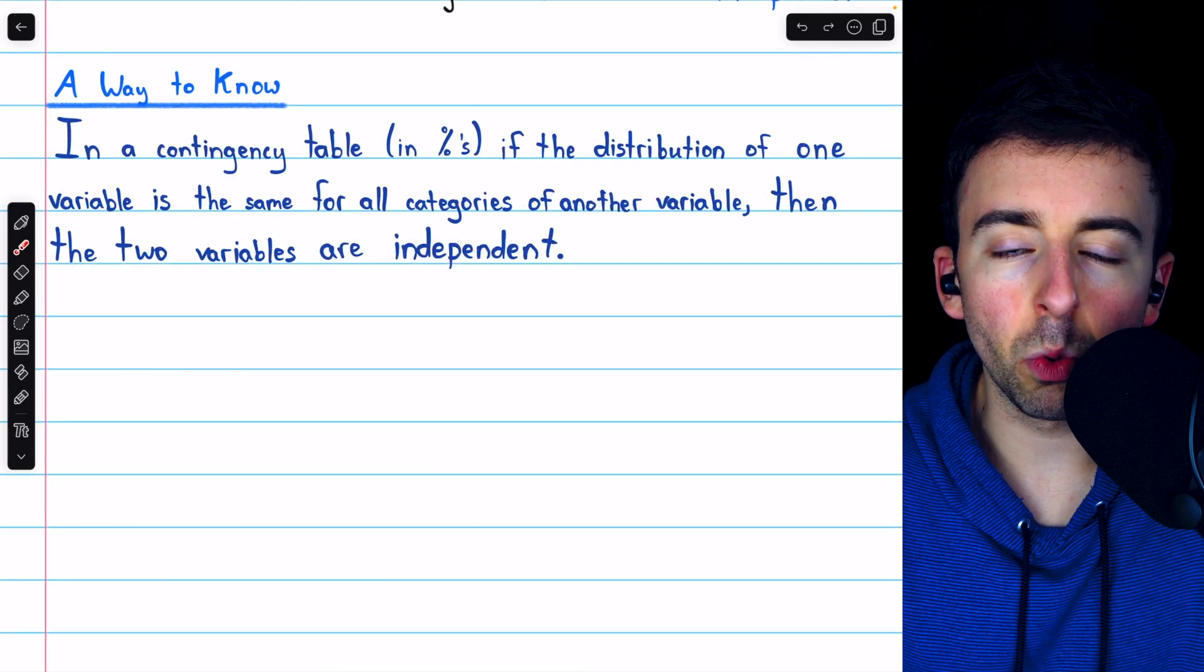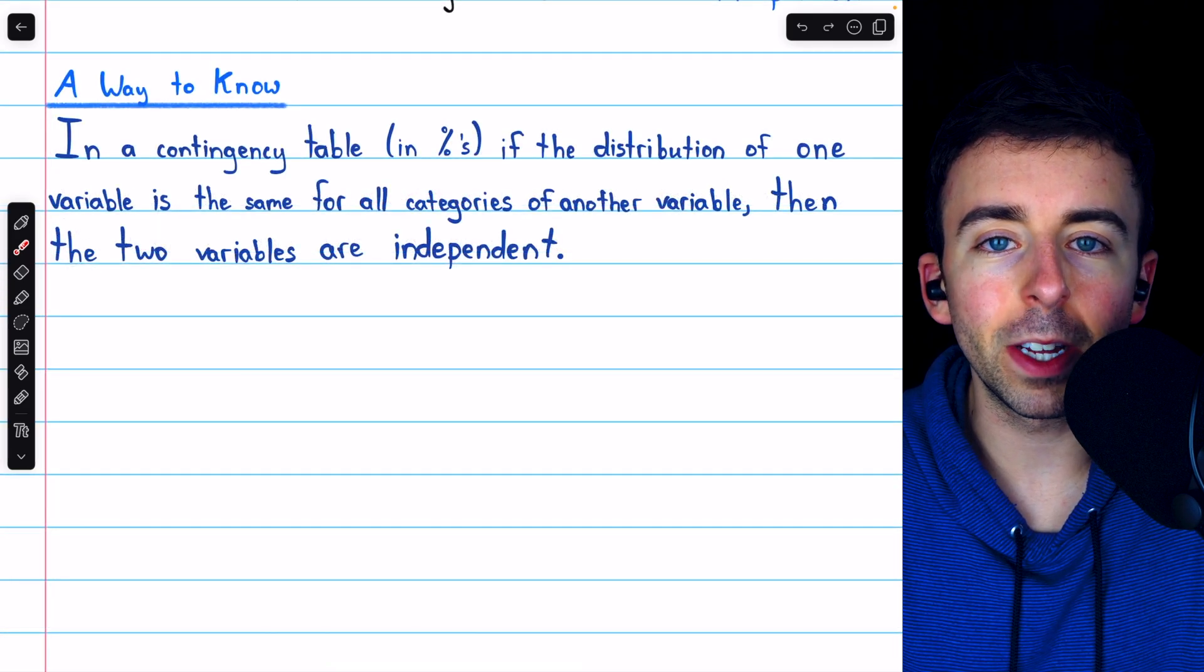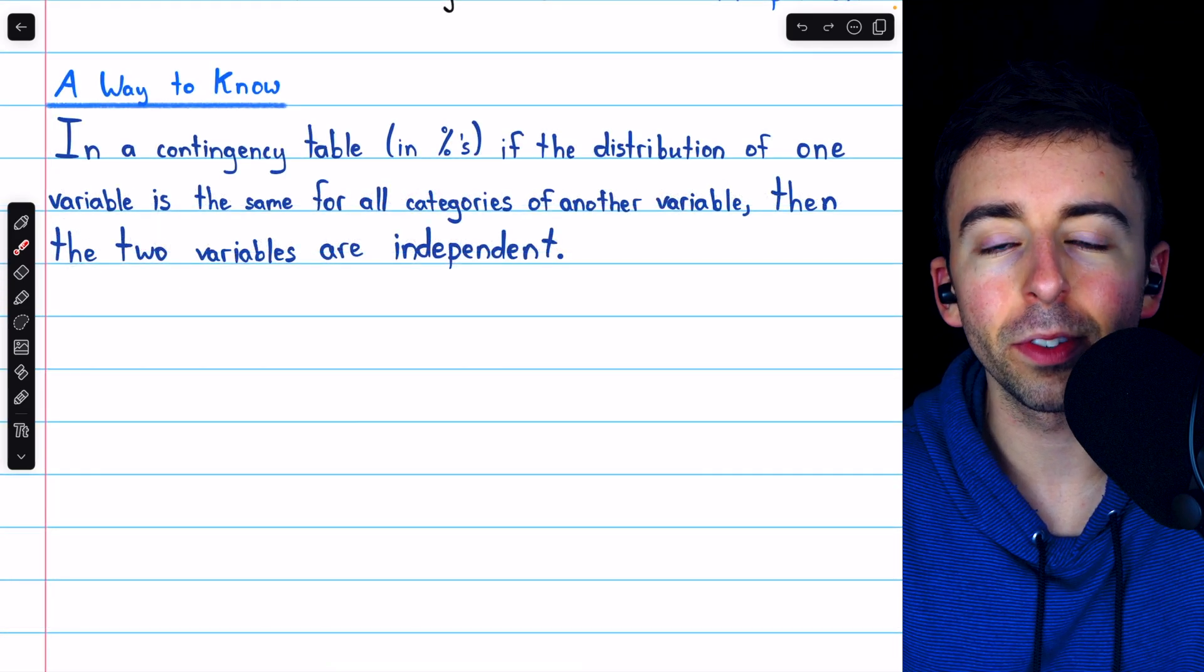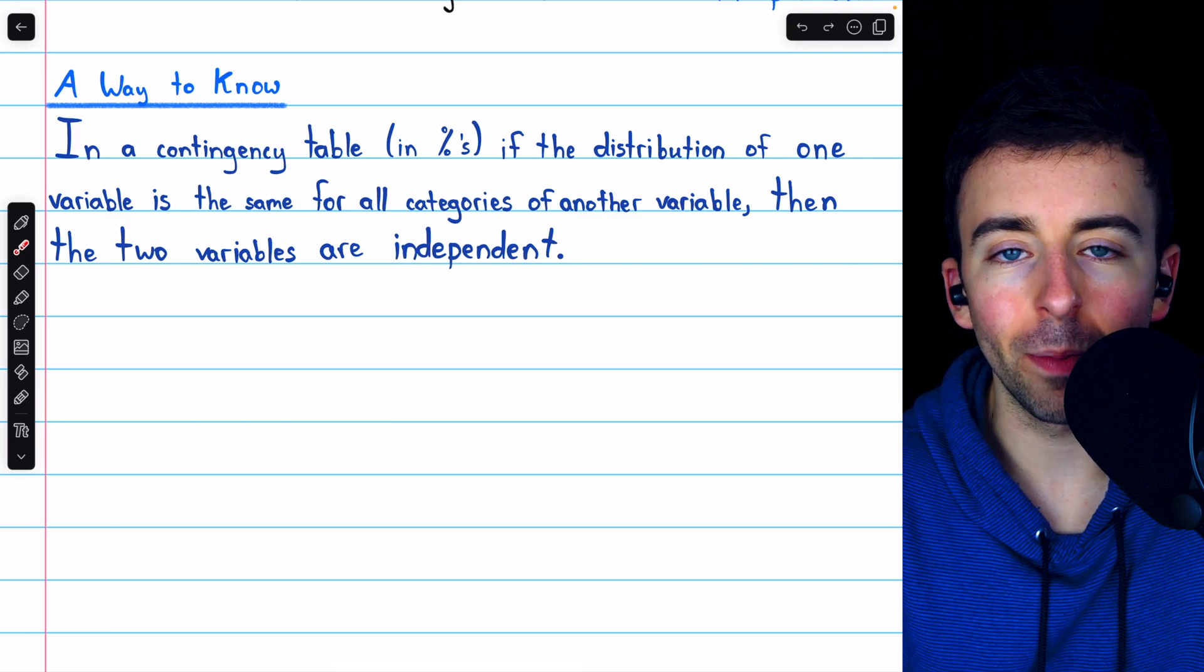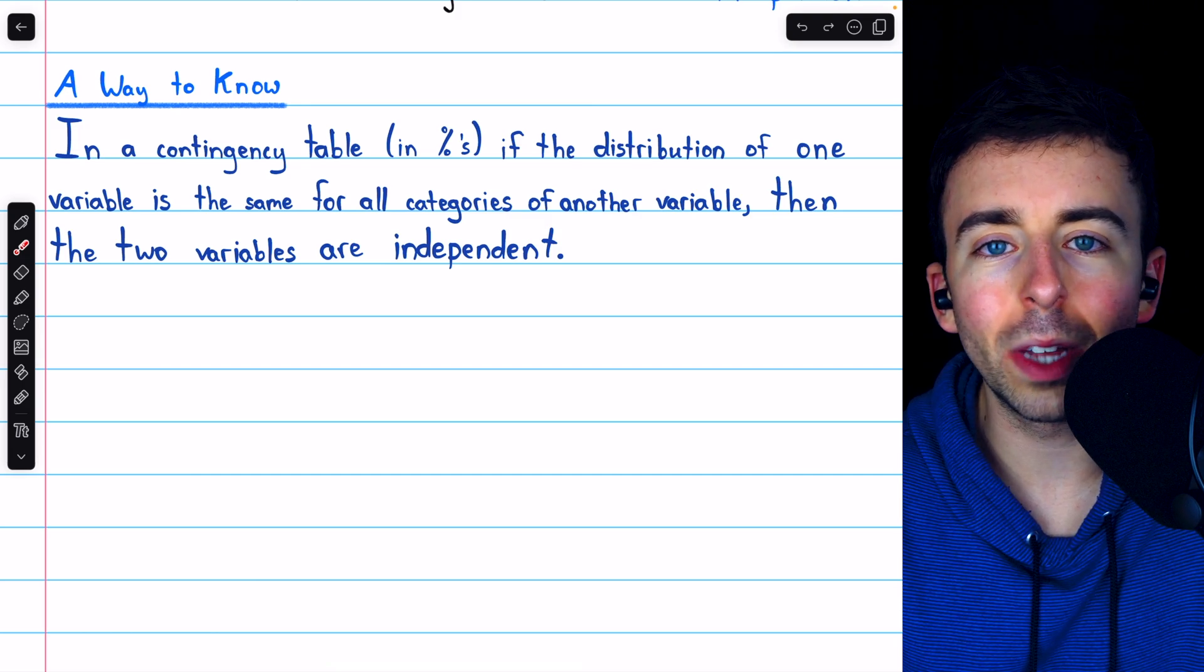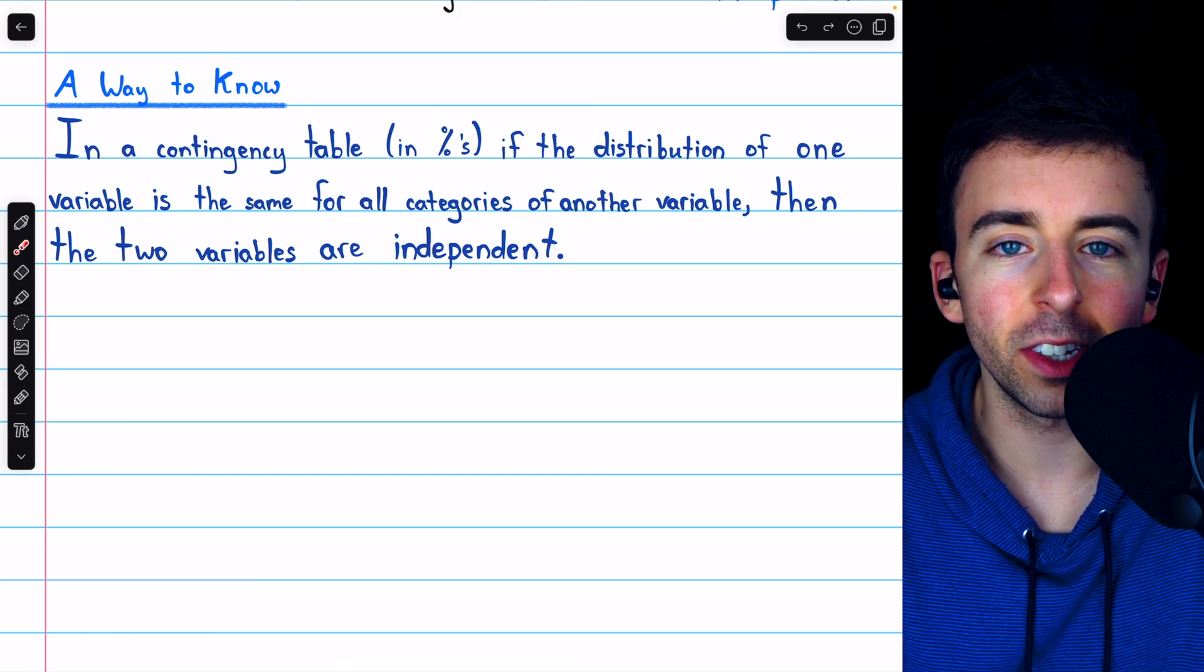Now those are examples where we just know from our experience in the world whether the variables are likely associated or not, but it's not always that easy. How do we know, just from the data, whether or not two categorical variables are associated?